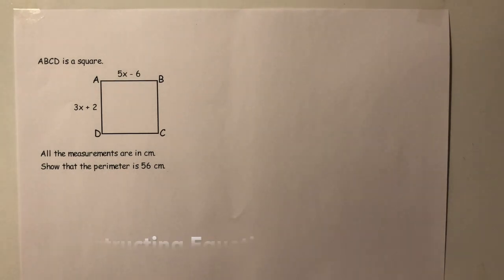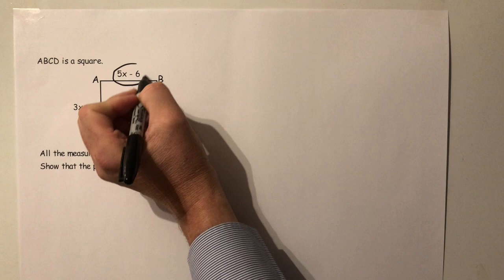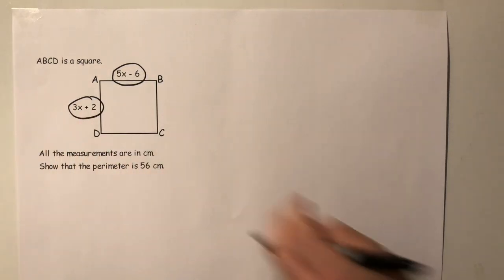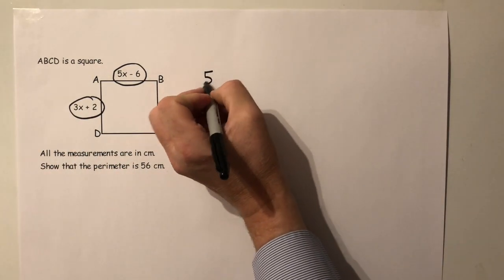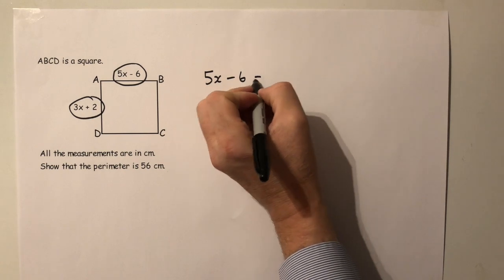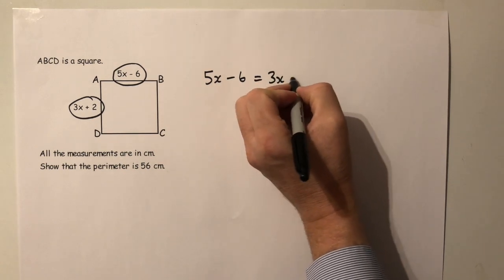Here we're told that we've got a square, so therefore this must be the same length as this. 5x minus 6 must be the same as 3x plus 2.